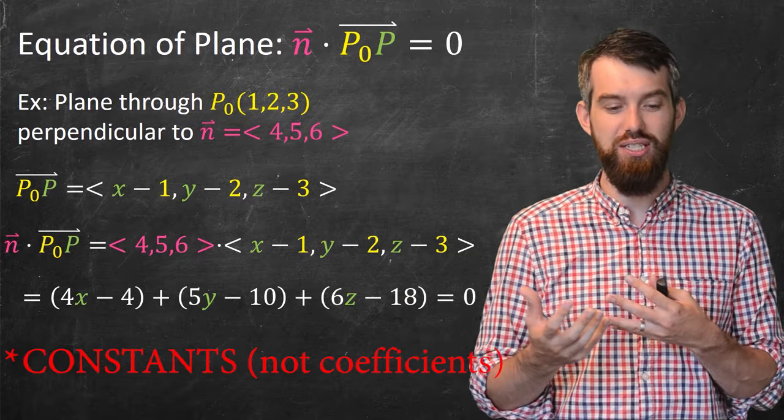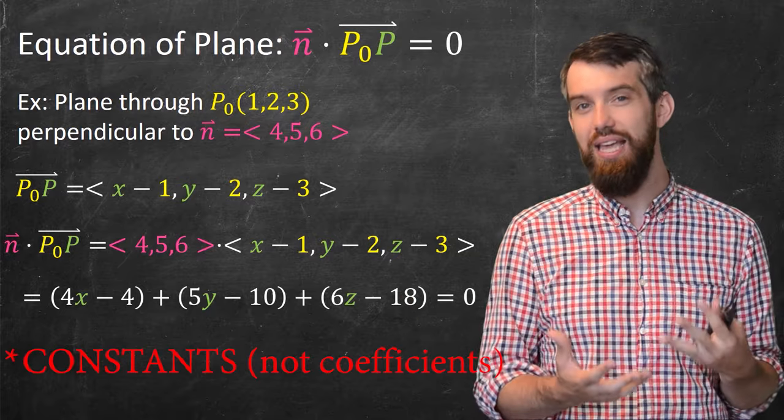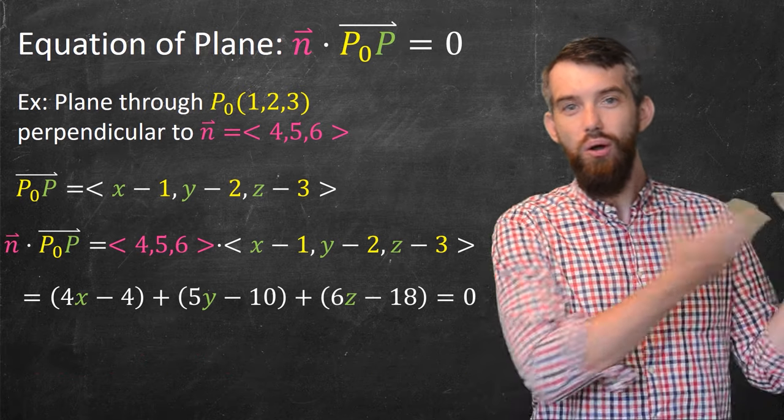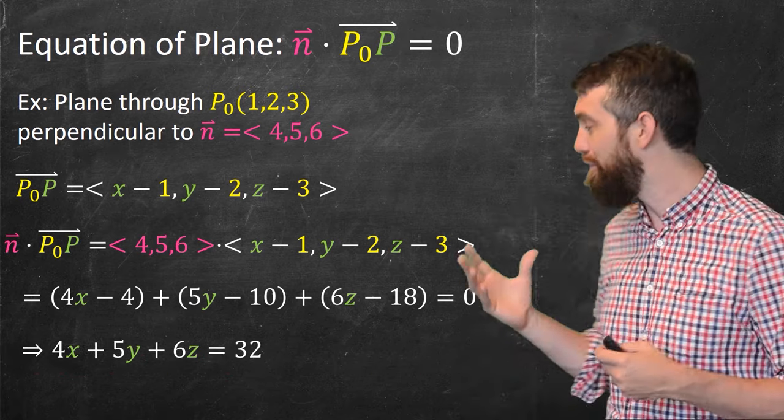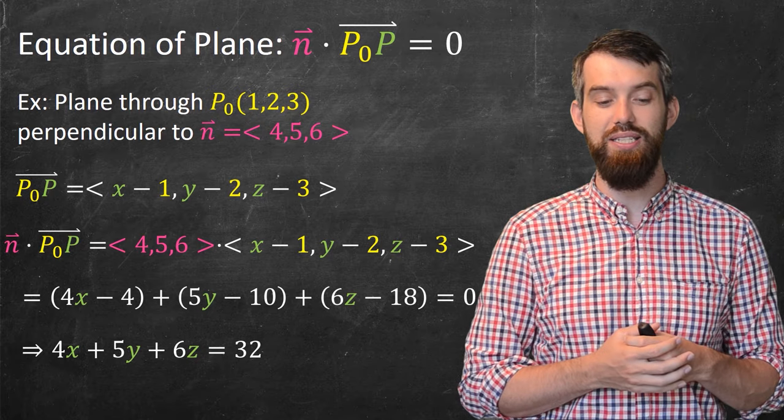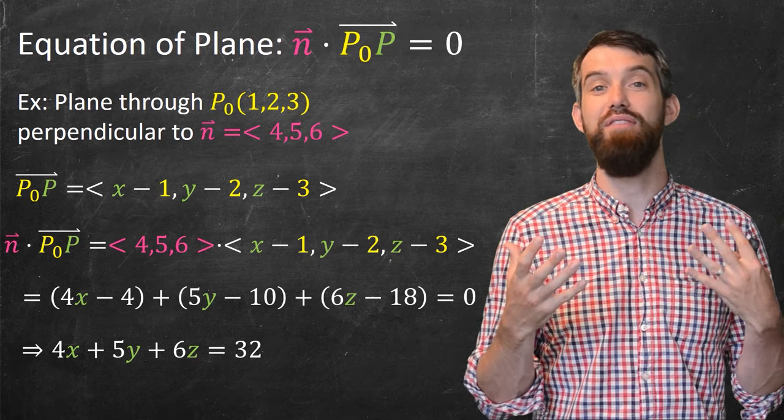And if I want to take this component form, I can see that there's actually a bunch of coefficients, the minus 4, the minus 10, the minus 18. I can move those all to the other side in the simplified component form of it, and I get 4x plus 5y plus 6z is equal to 32 if I've done my math correctly.